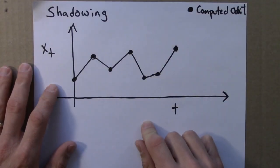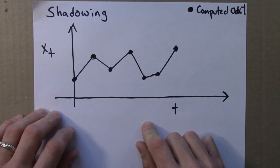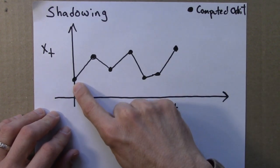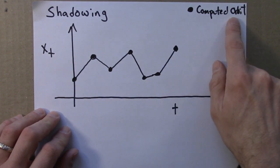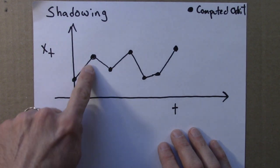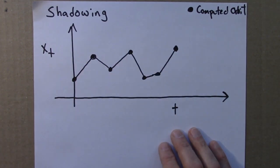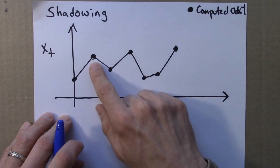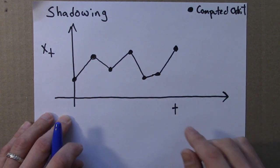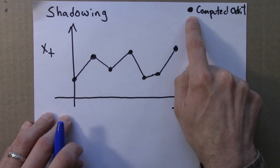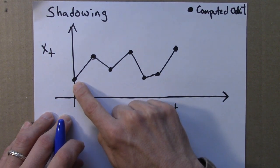Here's the idea behind shadowing. Let's say we're studying an iterated function like the logistic equation, and we choose an initial condition and then use a computer to compute an orbit and plot it in a time series plot. The problem is that the computer is making round-off errors — it doesn't have infinite precision — and so, because of sensitive dependence on initial conditions, this computed orbit is not actually the true orbit for the initial condition that we chose.